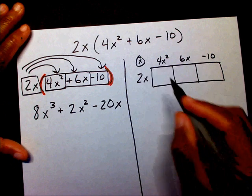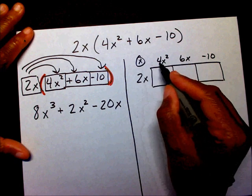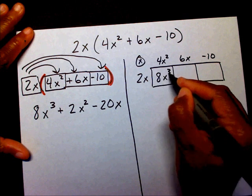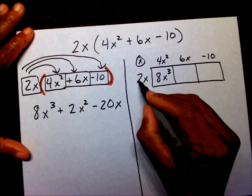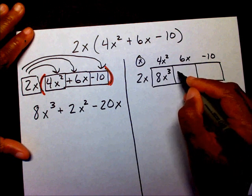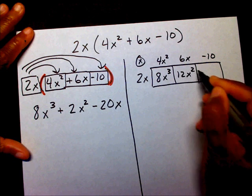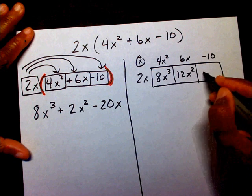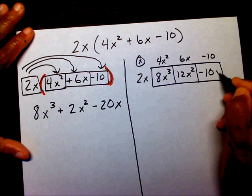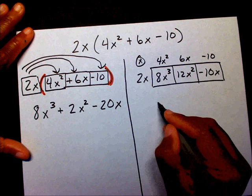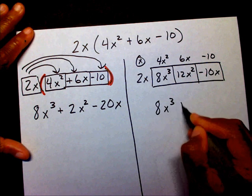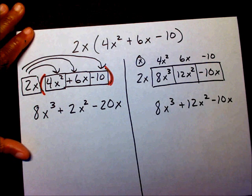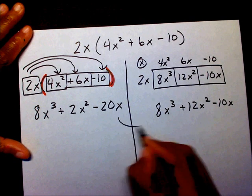2x times 4x squared is 8x to the third. So you end up with 8x cubed plus 12x squared minus 20x. Same answer either way.